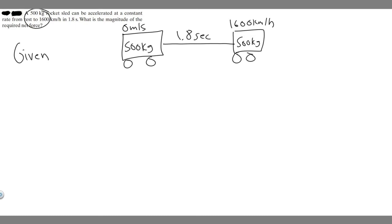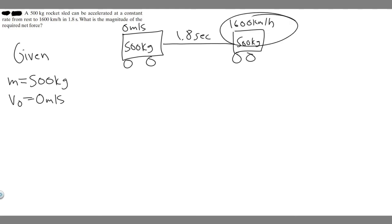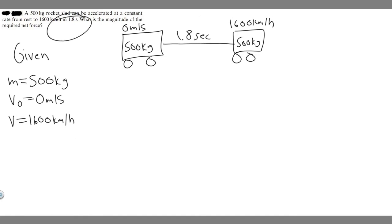Let's write down our givens. Mass equals 500 kilograms. It starts at rest, so initial velocity v₀ equals zero meters per second. Its final velocity v equals 1600 kilometers per hour. And time t equals 1.8 seconds.